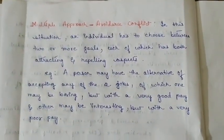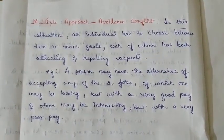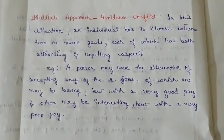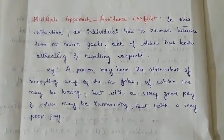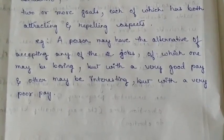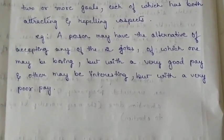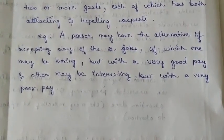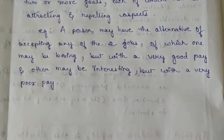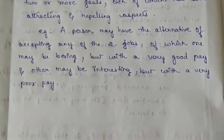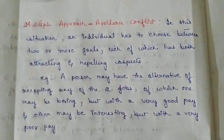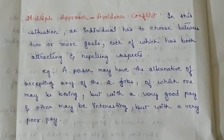The fourth type is multiple approach-avoidance conflict, which is one of the most difficult conflicts to resolve. Here the person faces two or more goals, and each goal has both attractive and unattractive aspects. For example, a person may be considering two jobs: one is boring but offers very good pay, and the other is interesting but offers very poor pay. He cannot choose both jobs at the same time and must decide which is better, but since both jobs have positive as well as negative aspects, it becomes difficult to decide — and this is known as multiple approach-avoidance conflict.